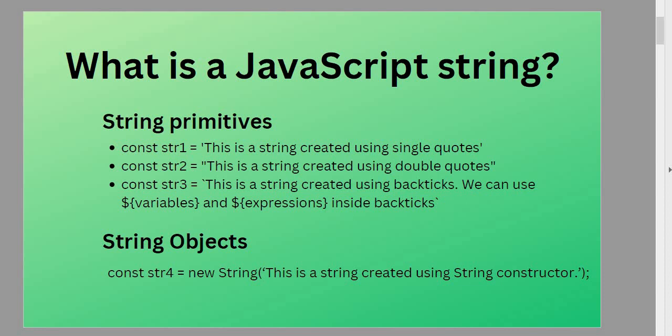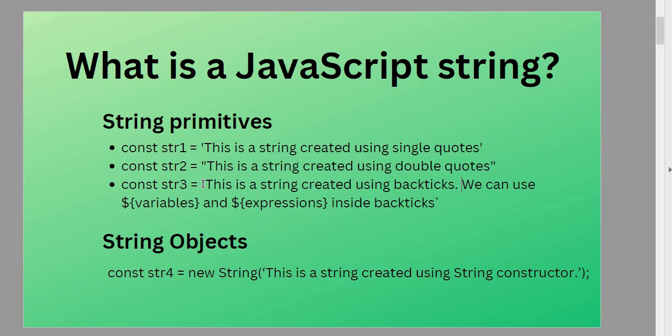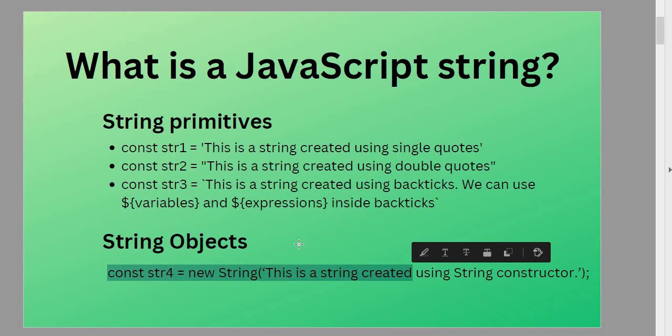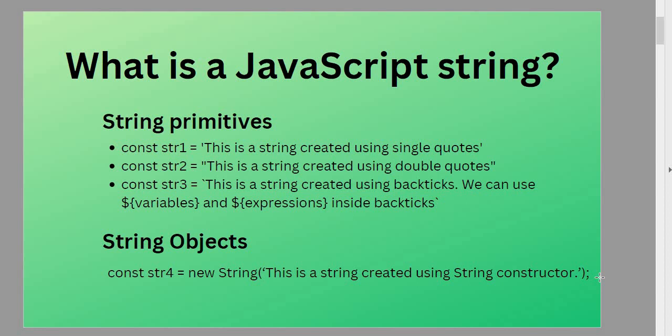There are two kinds of JavaScript strings: string primitives and string objects. These are the two ways to create JavaScript strings. When creating primitives, you can use single quotes, double quotes, or template literals. The advantage of template literals is that you can use variables and expressions within them. The other choice is the JavaScript string object, but avoid this option as much as you can, because it can create unexpected behaviors when comparing those strings.